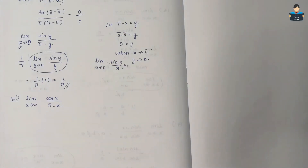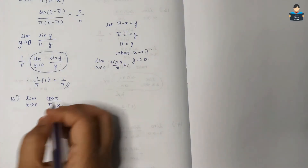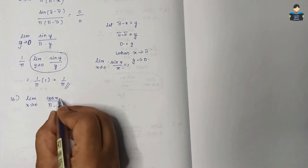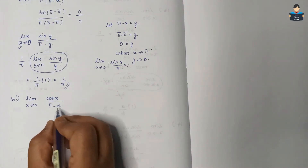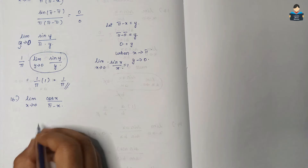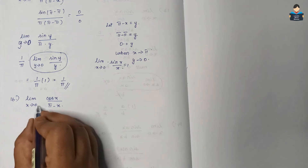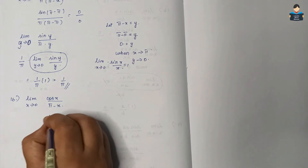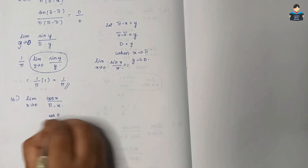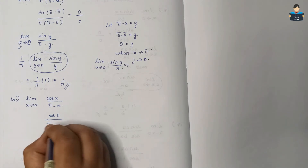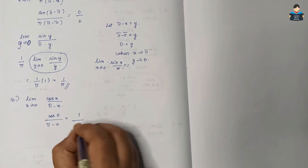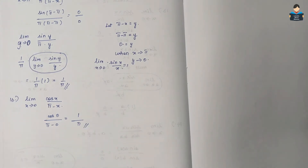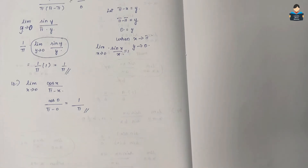Question 16: limit x tends to 0 of cos(x) by (π − x). We substitute x = 0 directly: cos(0) by (π − 0) = 1/π. So the answer is 1/π.